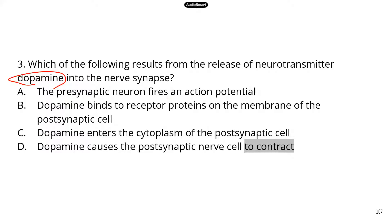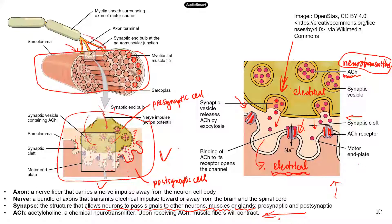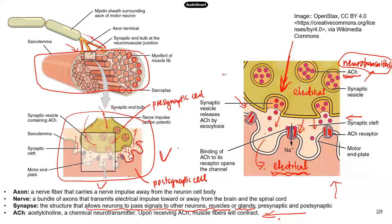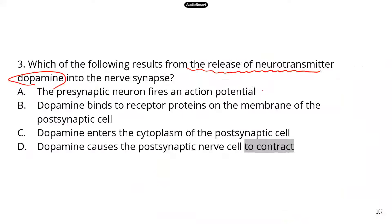You need to identify which event will lead to the release of a neurotransmitter. Remember, we need the electrical signal to travel to the axon terminal, and then it will be translated to a chemical signal. So the condition to release a neurotransmitter — whether acetylcholine or dopamine — has to be the electrical signal, or the firing of the presynaptic cell. When you look at answer A, that's exactly what happens: the presynaptic neuron fires an action potential, and once this reaches the axon terminal, it triggers the release of that chemical messenger. So the correct answer is A.